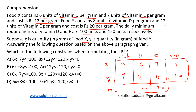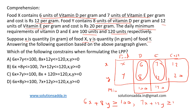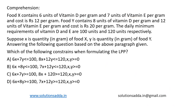Now let's write the constraints. For vitamin D: 6x + 8y ≥ 100 is the first constraint. For vitamin E: 7x + 12y ≥ 120 is the second constraint. Since quantities cannot be negative, x, y ≥ 0. From the options, option D — 6x + 8y ≥ 100, 7x + 12y ≥ 120, x, y ≥ 0 — is the correct answer.